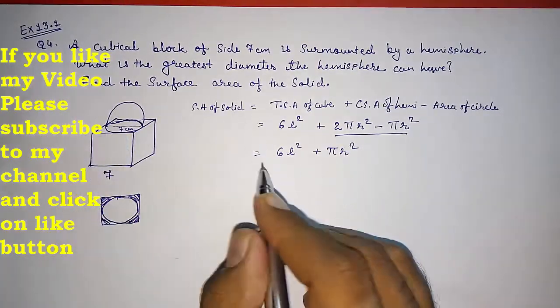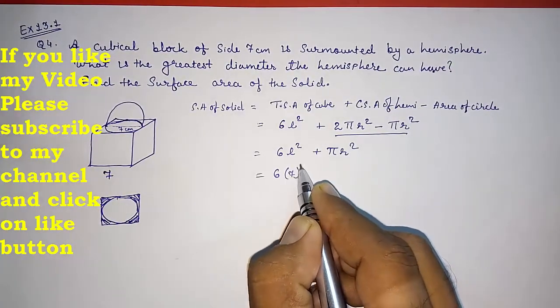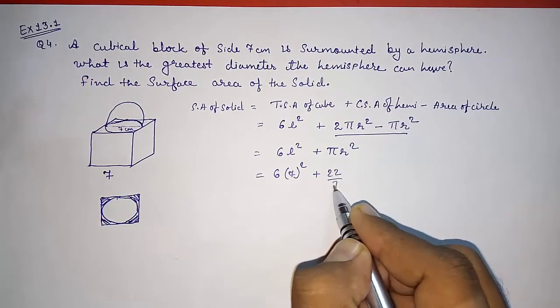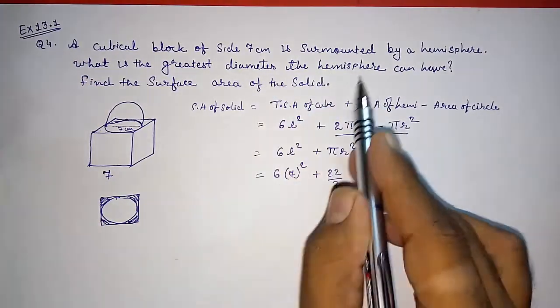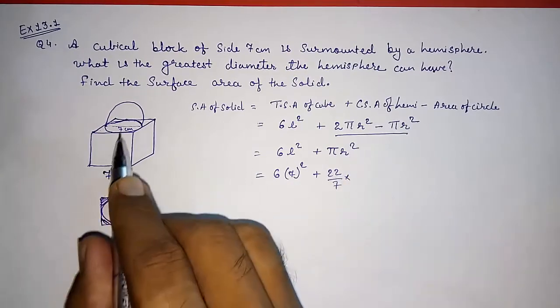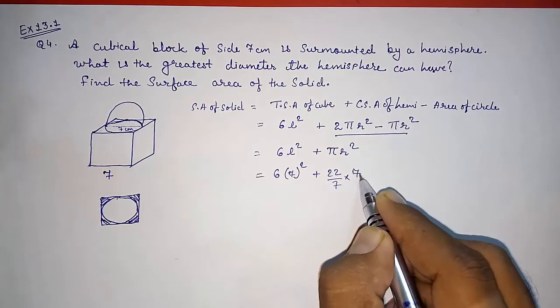Now you can put the values: 6 and the length squared, that is, length is 7, so 7 squared, plus 22/7 - as π is not given to you, we are going to take 22/7 - and radius, we know diameter is 7, so radius will be 7/2.